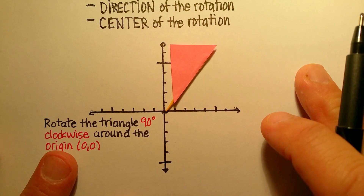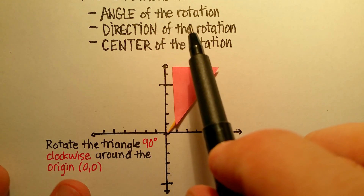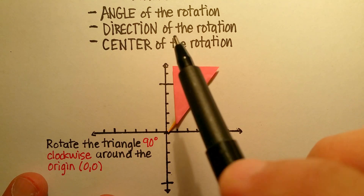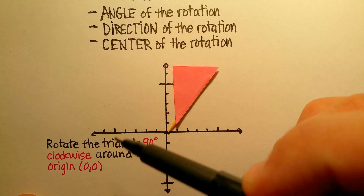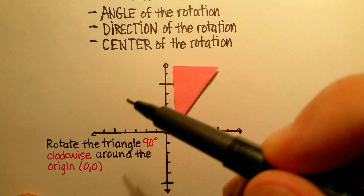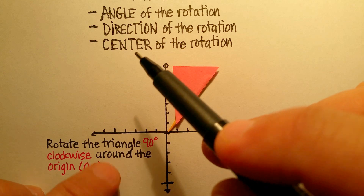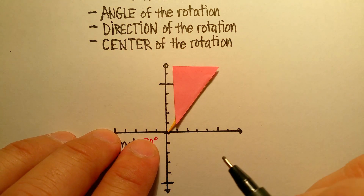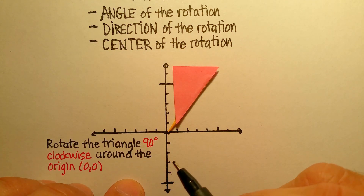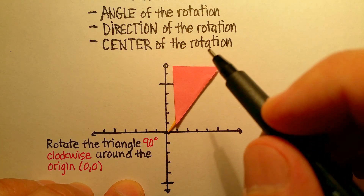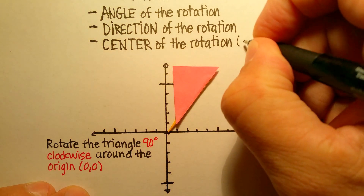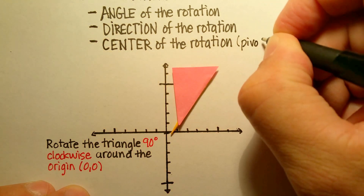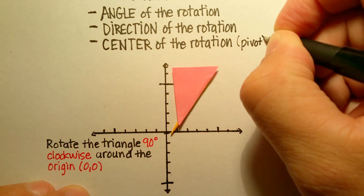Remember what I said: we need to know the angle of the rotation, we need to know the direction it's going — either clockwise or counterclockwise — and then we need to know where the center of the rotation is, or what I like to call the pivot point. Where is the pivot taking place?